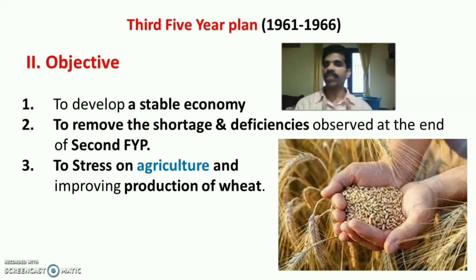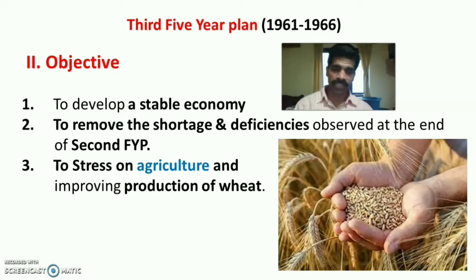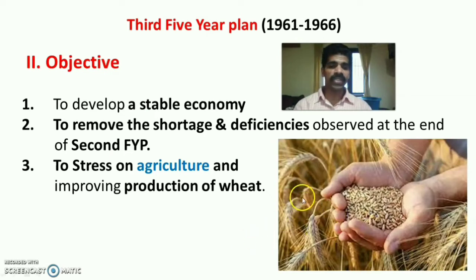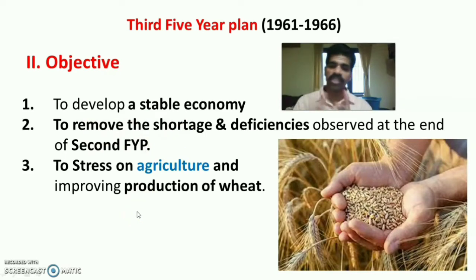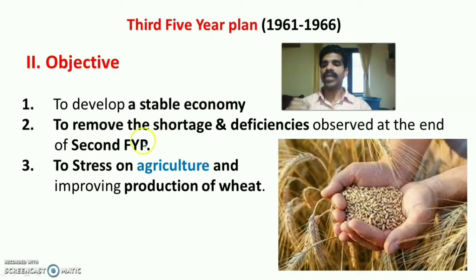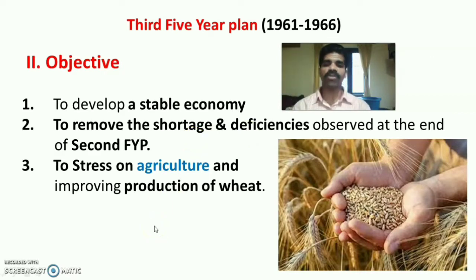The objectives of the Third Five-Year Plan were: first, to develop a stable and continuous economy in the country; second, to remove the shortage and deficiencies observed at the end of the Second Five-Year Plan; and third, to stress on agriculture and improve the production of wheat in the country to make a stable economy.